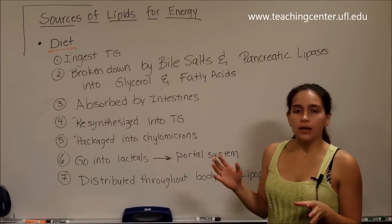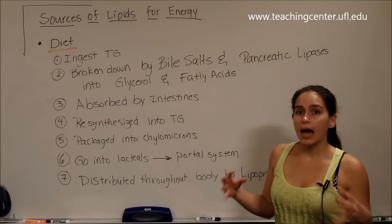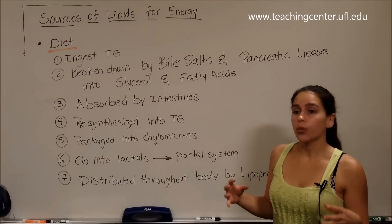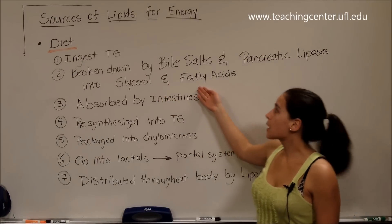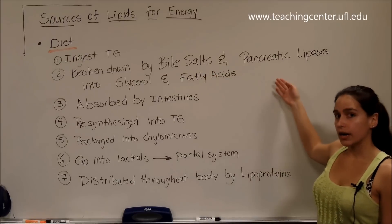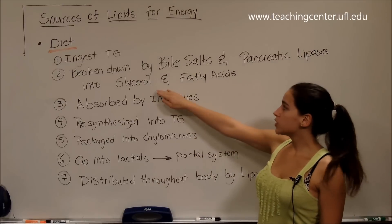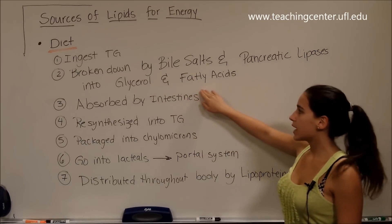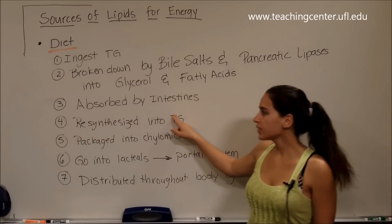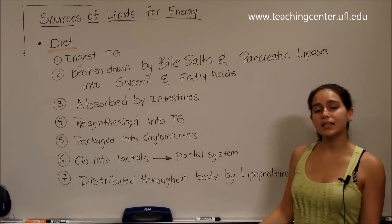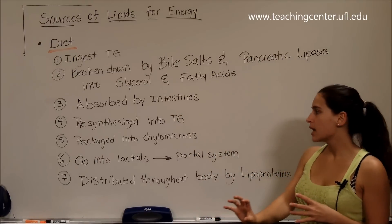The first source is the diet. Once we ingest triglycerides, they are broken down into glycerol and fatty acids in the intestines by bile salts and pancreatic lipases. Once they are broken down into glycerol and fatty acids, they are absorbed by the intestines and resynthesized into triglycerides, packaged into chylomicrons.